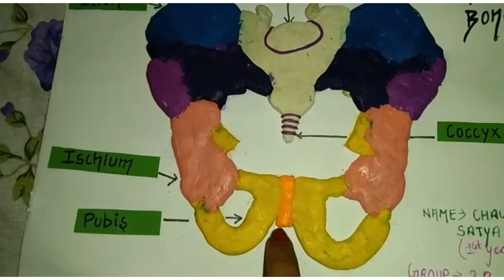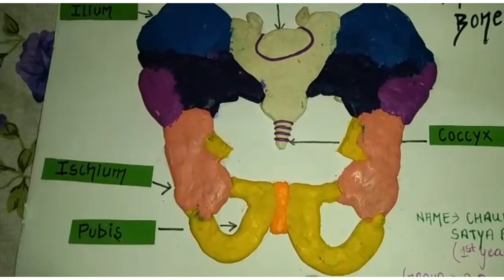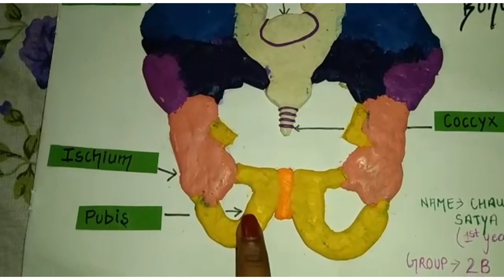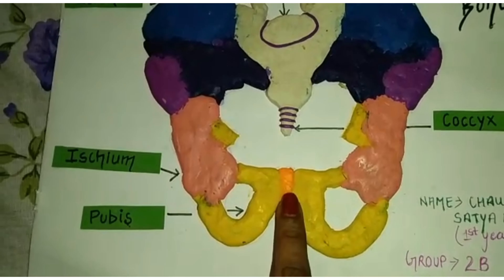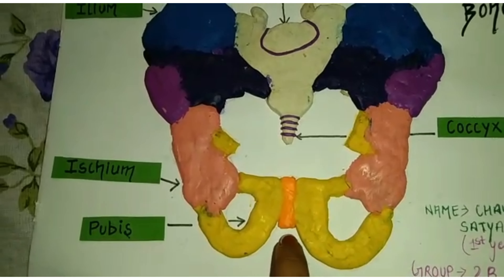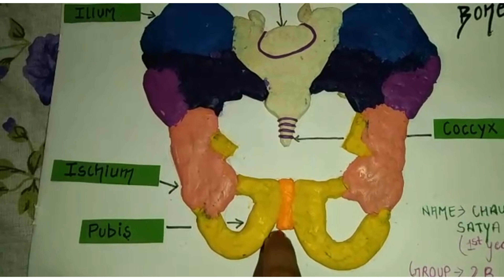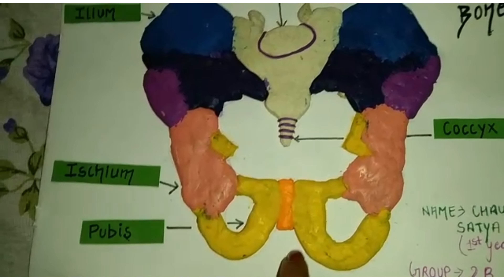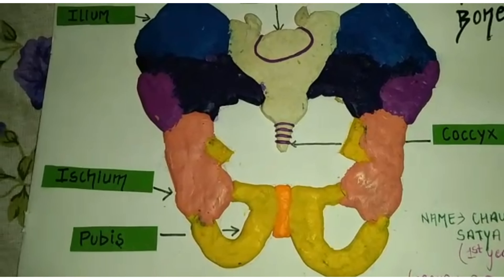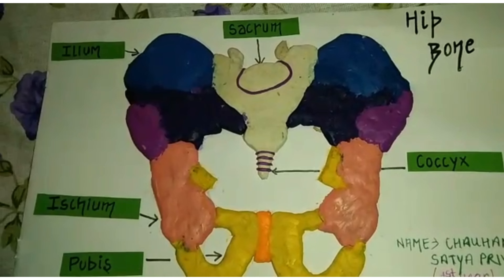The last important feature is the pubic arch. Whenever a scientist wants to determine whether a skeleton is male or female, they look at this angle. When this angle is greater than 90 degrees, it is the pelvic girdle of a female, and when it is less than 90 degrees, it is the pelvic girdle of a male. This is all about the hip bone. Thank you.